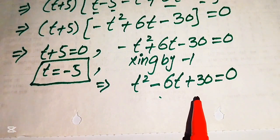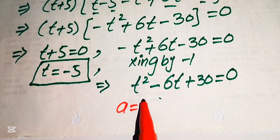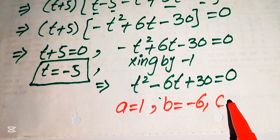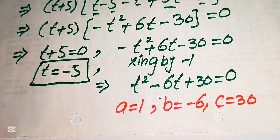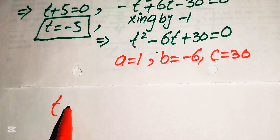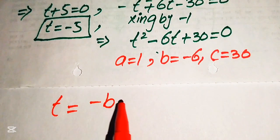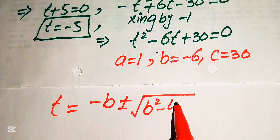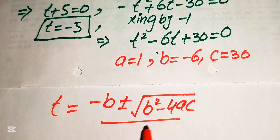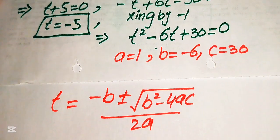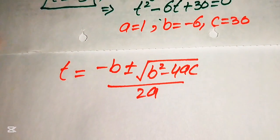The coefficients are a equals 1, b equals minus 6, and c equals 30. We apply the quadratic formula: t equals minus b plus or minus the square root of b squared minus 4ac, all divided by 2a.